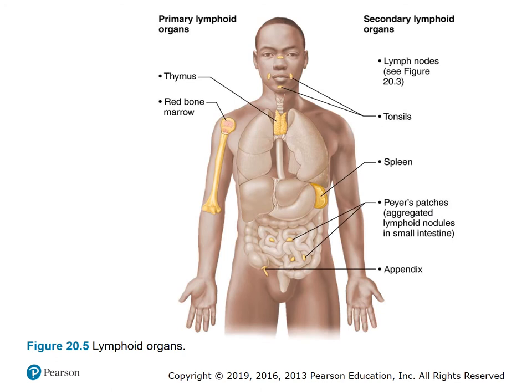Figure 20.5, lymphoid organs: the primary lymphoid organs are the thymus and the red bone marrow. The secondary lymphoid organs are the lymph nodes — shown with more complete distribution in figure 20.3 — the tonsils, the spleen, and Peyer's patches in the ileum and the appendix.